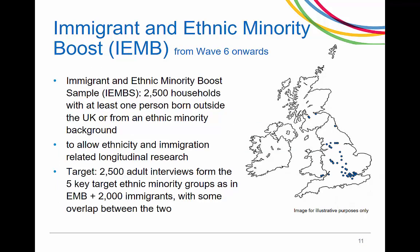In the sixth wave of Understanding Society, an immigrant and ethnic minority boost sample was added. This was to account for the population changes in the UK since wave 1 and to allow for ethnicity and immigration-related longitudinal research. The target was to have 2,500 adult interviews from the five key target ethnic minority groups as in the EMBS and 2,000 immigrants allowing for some overlap between the two. As in the EMB, the sample was selected from high ethnic minority and immigrant concentration areas in Great Britain.